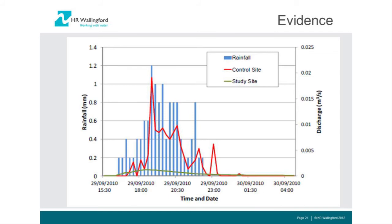Source attenuation involves putting attenuation systems and check dams in place, making the most of storage within conveyance swales. Here is a more regional attenuation system in an open space. Monitoring evidence from the Lamb Drove site shows clearly that the control site — a developed site — exhibits a very peaky, rapid rate of runoff, while the outflow from the SUDS system is the green line at the bottom, showing a very much depressed response.